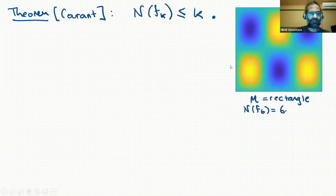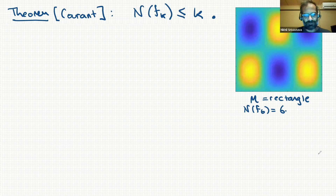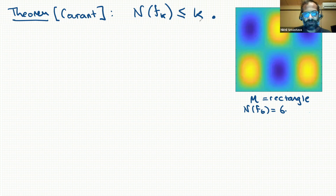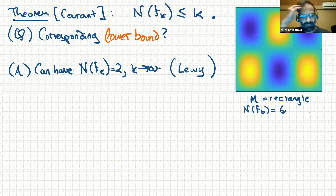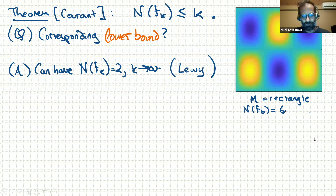There's a famous result of Courant which says the number of nodal domains of the kth eigenfunction is at most k. There are examples where this is achieved, such as the one-dimensional case. Regarding lower bounds: in the worst case, you can't say anything. There are examples of manifolds where there's an infinite sequence of eigenfunctions with index going to infinity but the number of nodal domains is just two — for example, examples due to Louis.